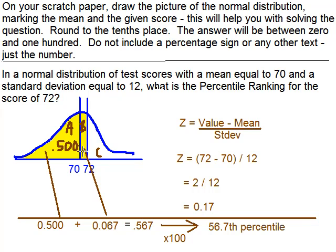We need to figure out area B. To figure out area B, we took that 72 and we figured out the z-score for it. 72 minus 70, that was the mean, divided by the standard deviation of 12. That was 2 over 12, or .17.